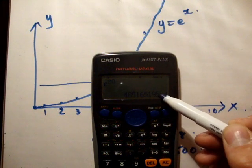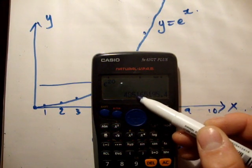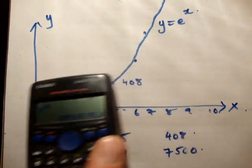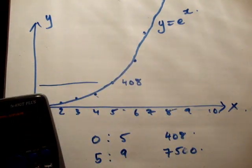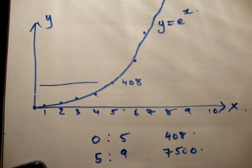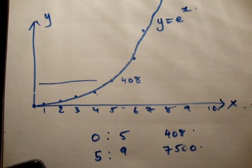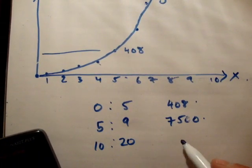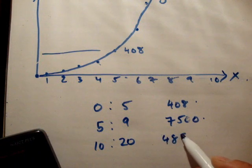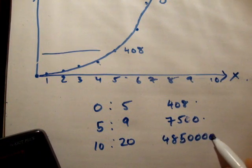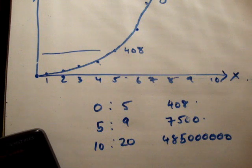Now just as a matter of interest, what about if we put in e to the 20? e to the 20 is 485 million. So we'll see between 10 and 20, we went up to 485 million.